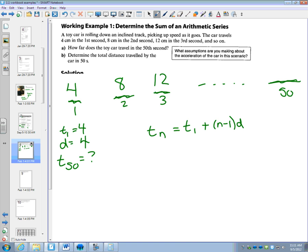Remember it was T1 plus (n minus 1) times d. And n in this case is 50. So the 50th term is equal to the first term, 4, plus 50 minus 1 differences. And the difference is 4. So T50 is equal to 4 plus 49 times 4.